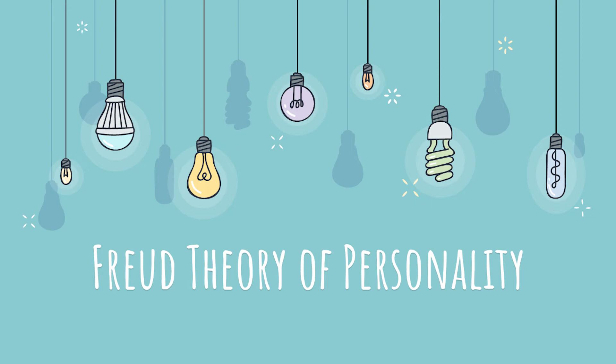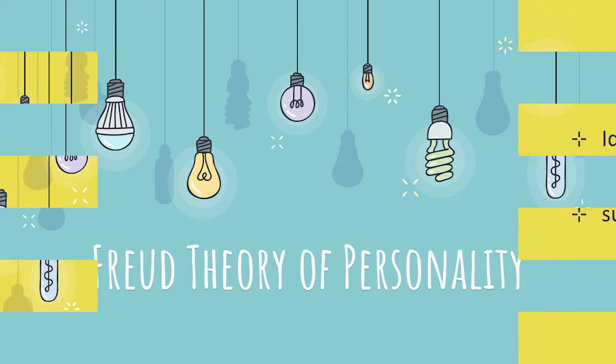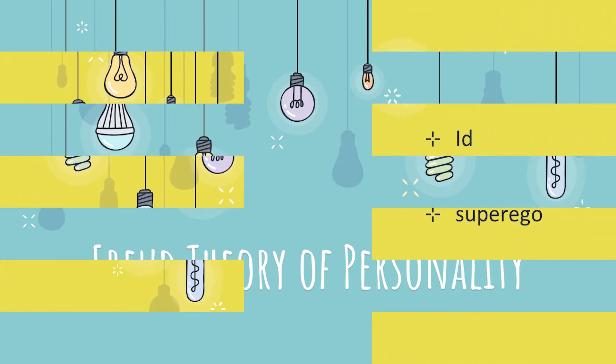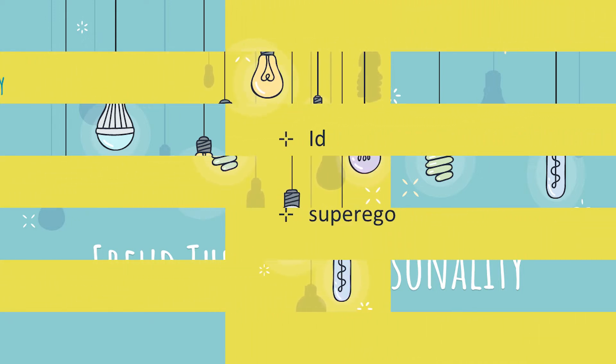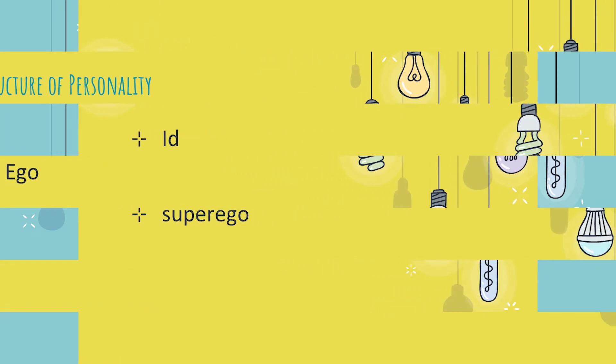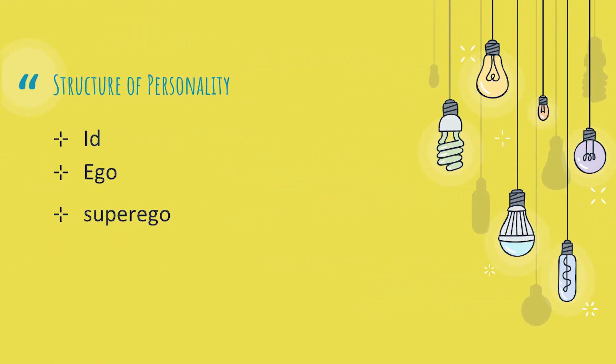Today we are going to discuss Freud's theory of psychoanalysis. As we know, Freud is considered the father of psychology. Freud divided personality into three components: the first one is id, the second one is ego, and the third one is superego.